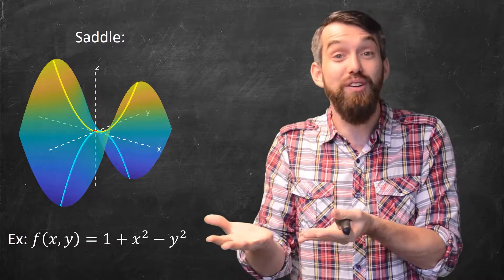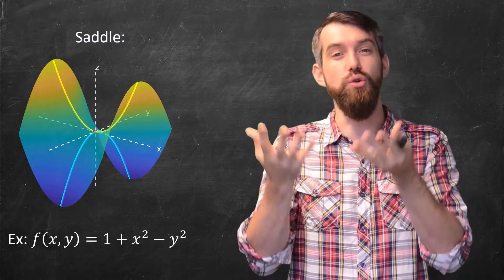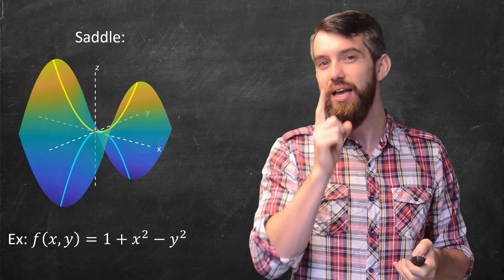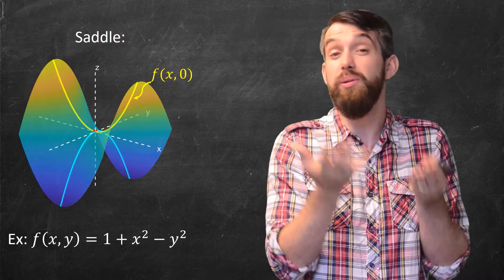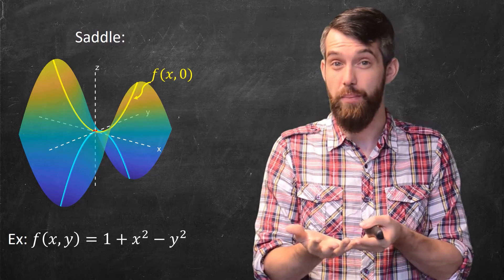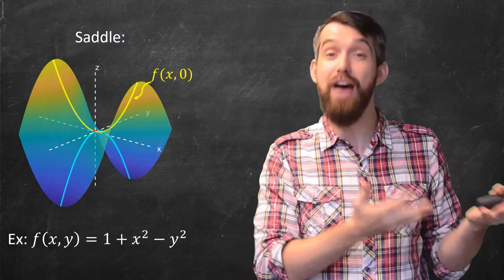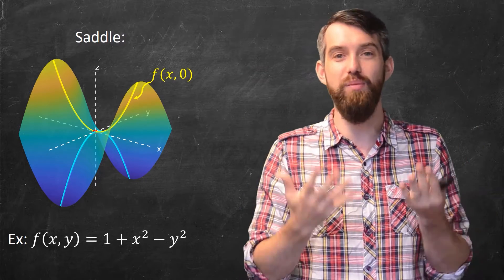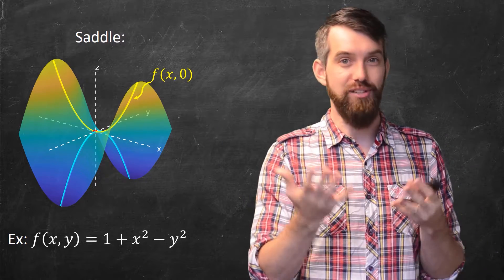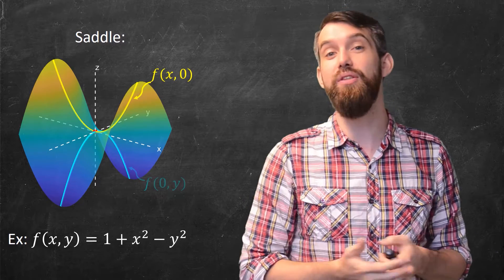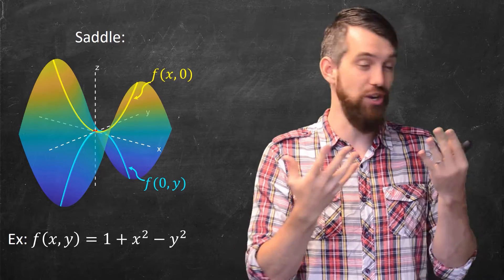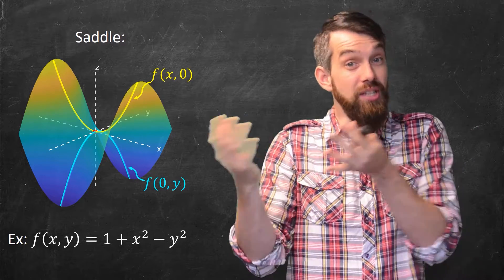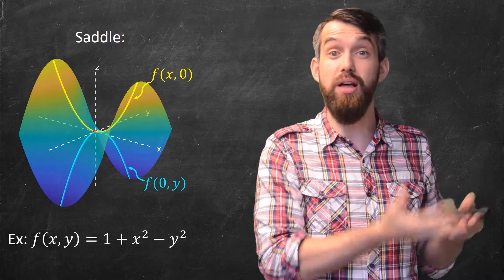In a single variable calculus case, it wasn't relevant because you only ever had one direction that you could go. Now, these two curves — the yellow and blue ones — the yellow one is what happens when I just plug in the value of y equal to zero. So I have f of x, zero. Then for a multivariable function f of x and y, if I plug in y equal to zero, I now have a single variable function. Likewise, for the blue one, if I plug in x equal to zero, I also get a single variable function f of zero comma y. Because they're single variable functions, I can use all the analysis from first-year calculus.